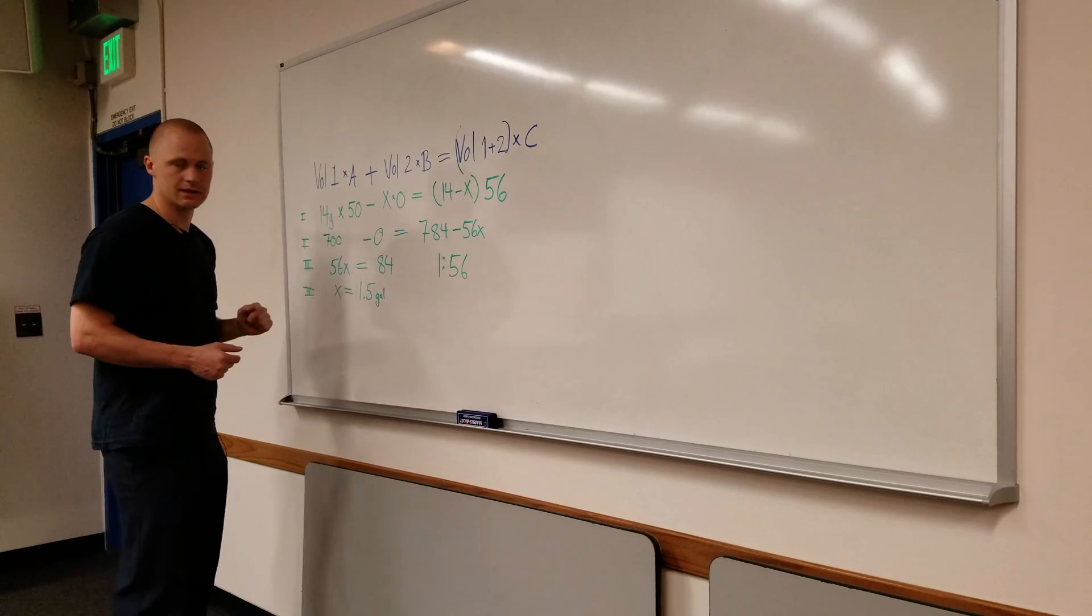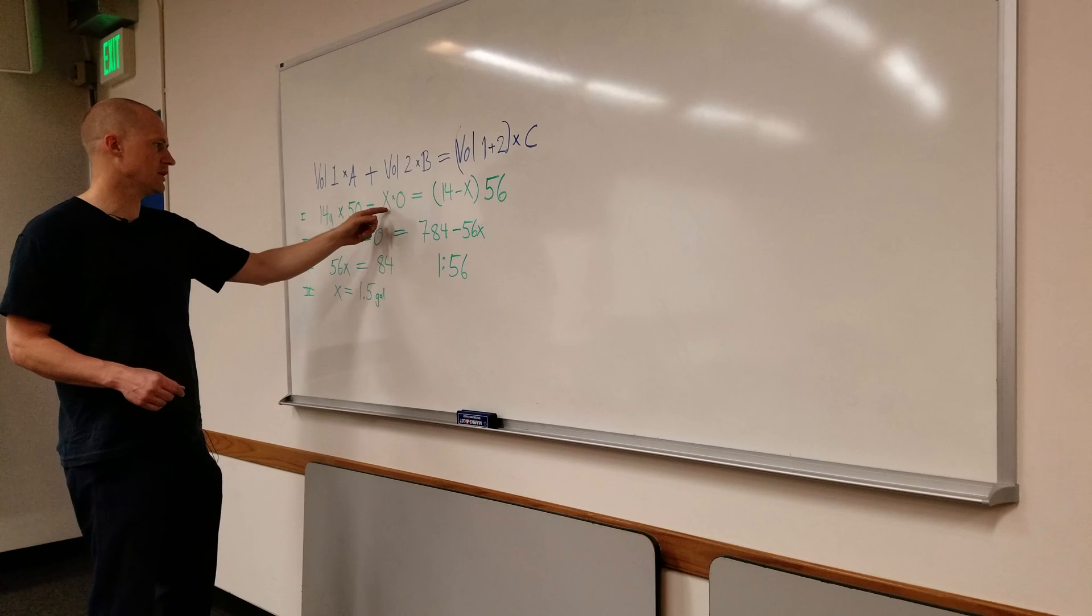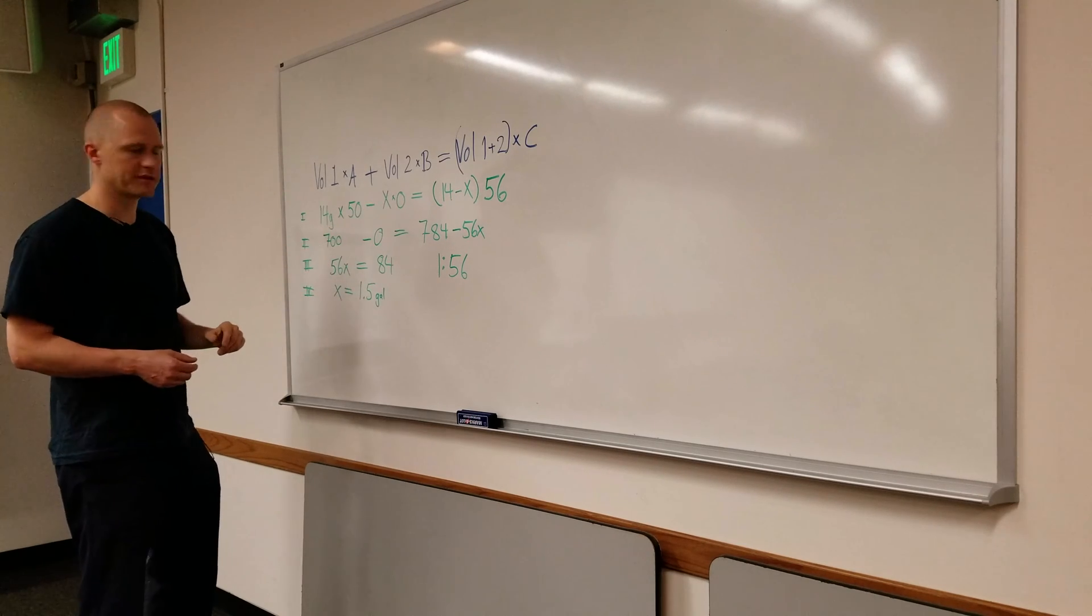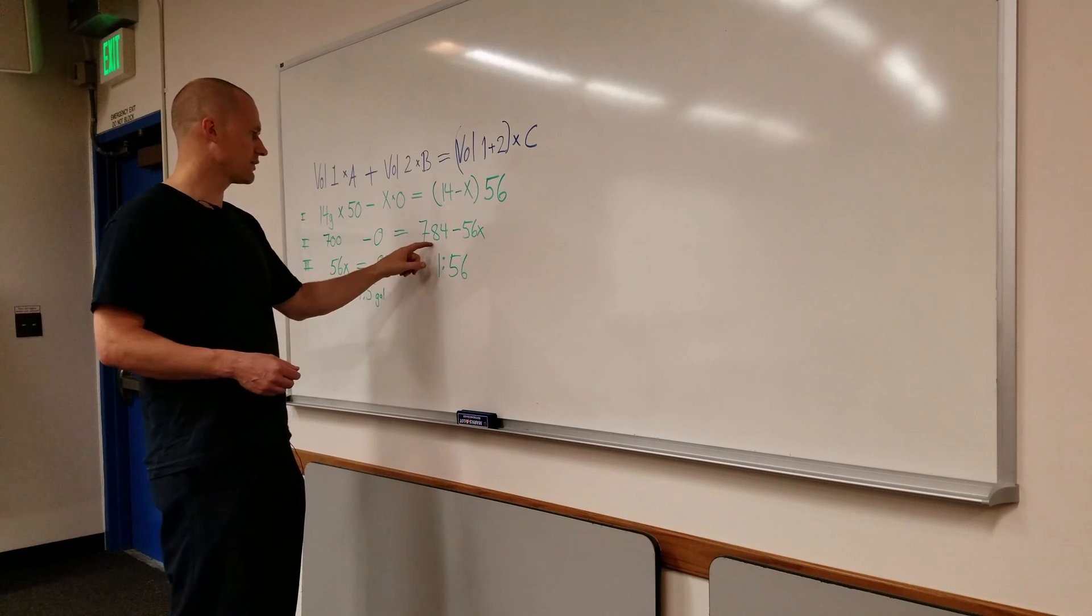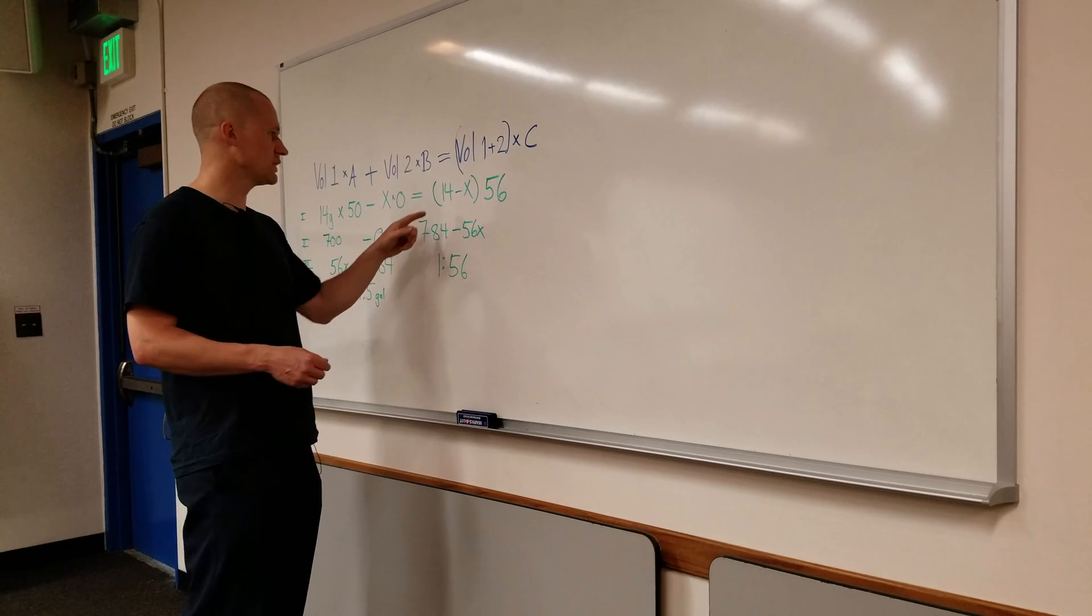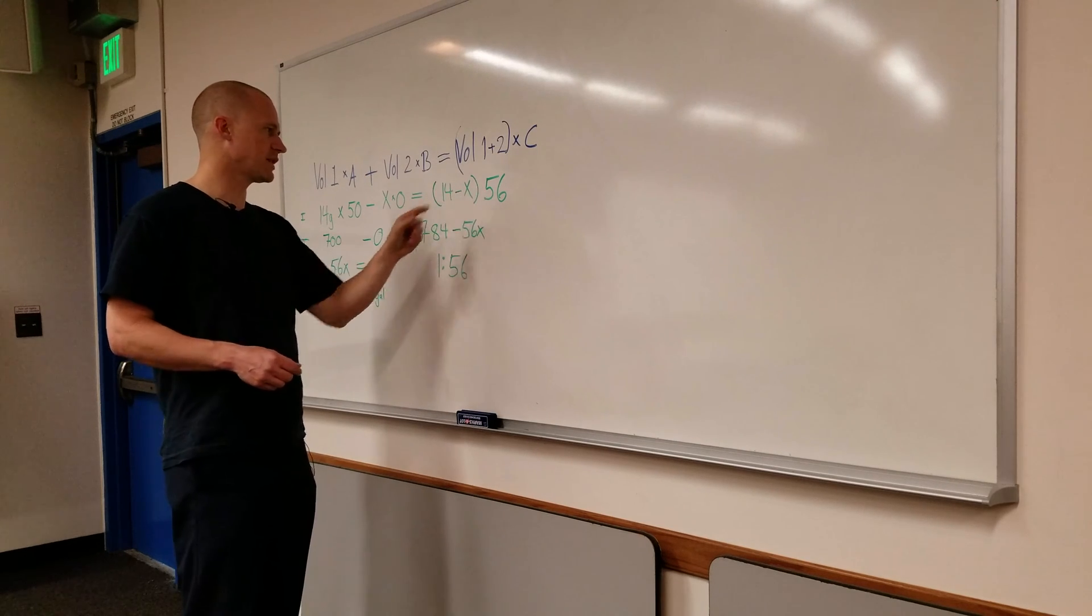So we go ahead and solve, end up with 14 times 50, 700, x times 0, anything multiplied by 0 is 0, so it's essentially just 700, equals 784, which is 14 times 56, minus the 56x.